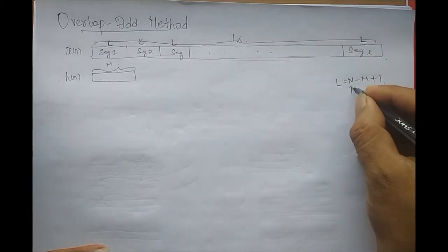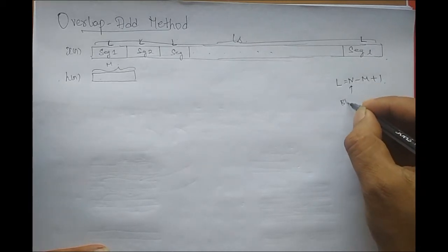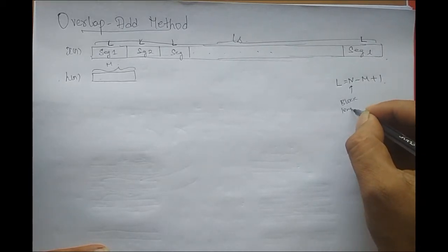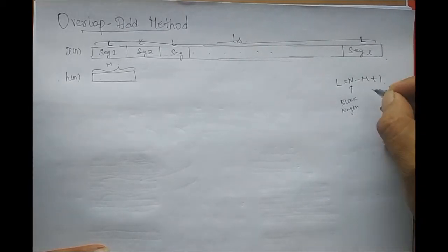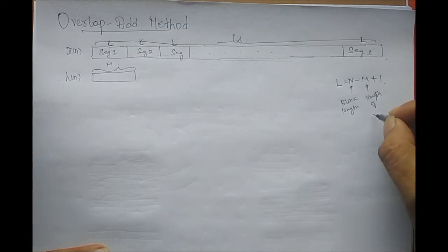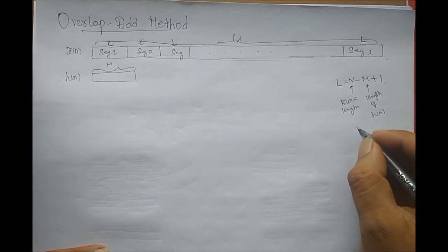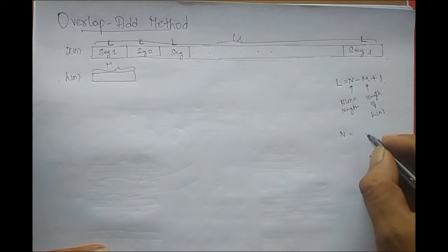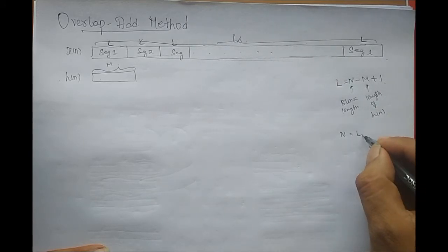Where N is the block length and M is the length of the impulse response — the length of H(n). From this, I can write the block length as N equals L plus M minus 1.